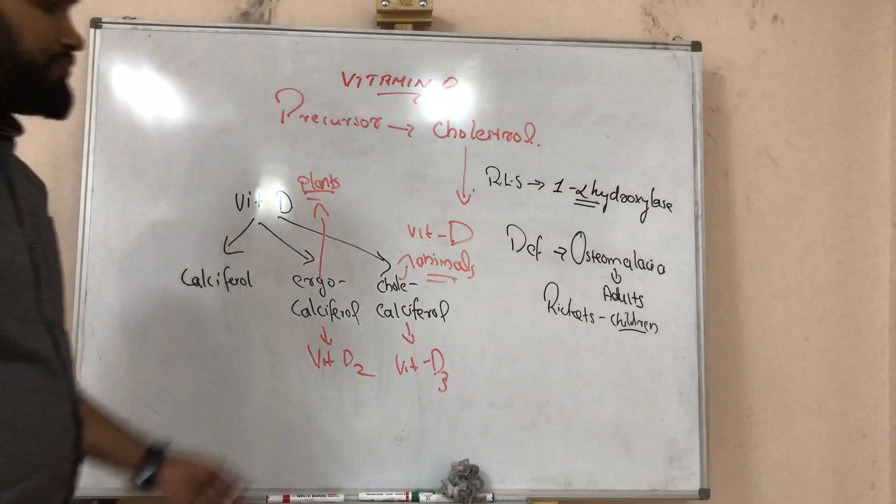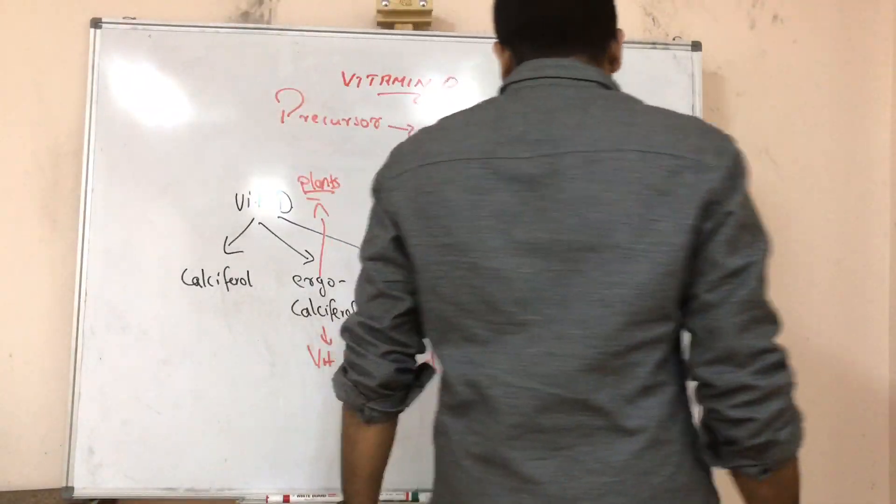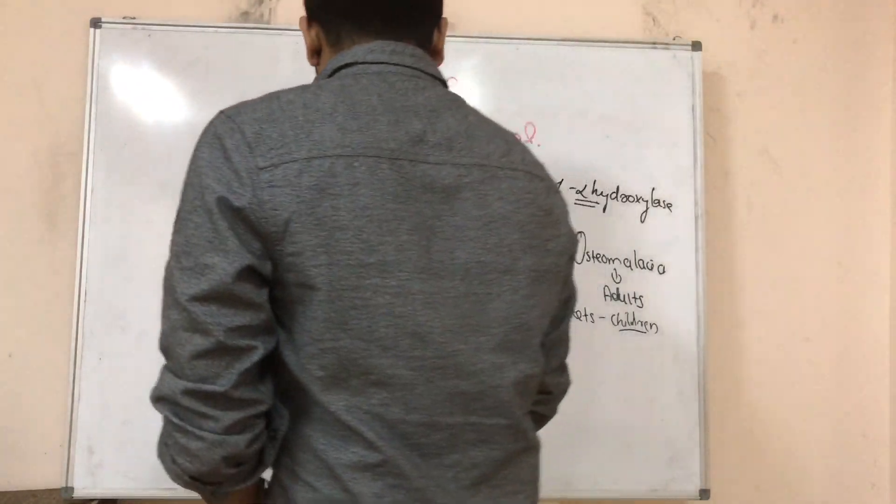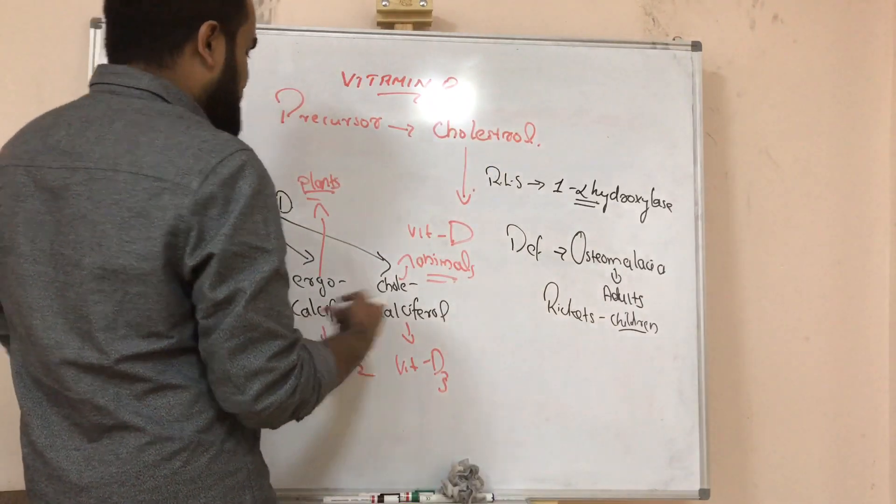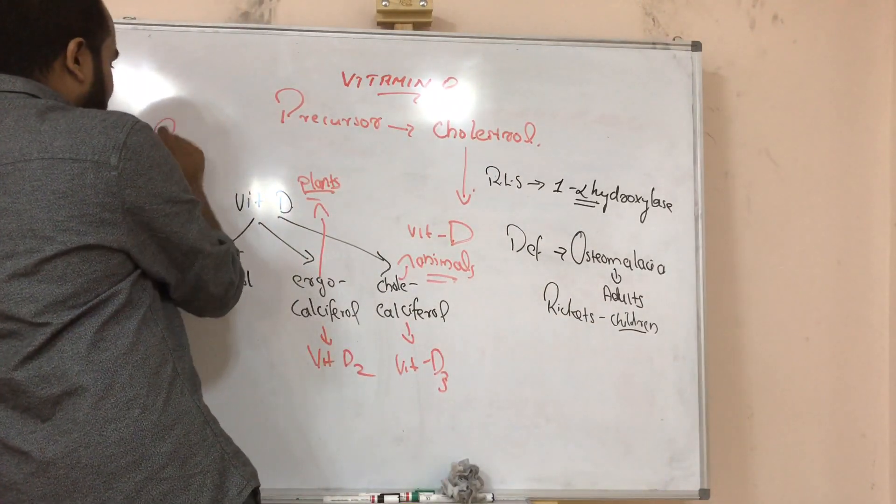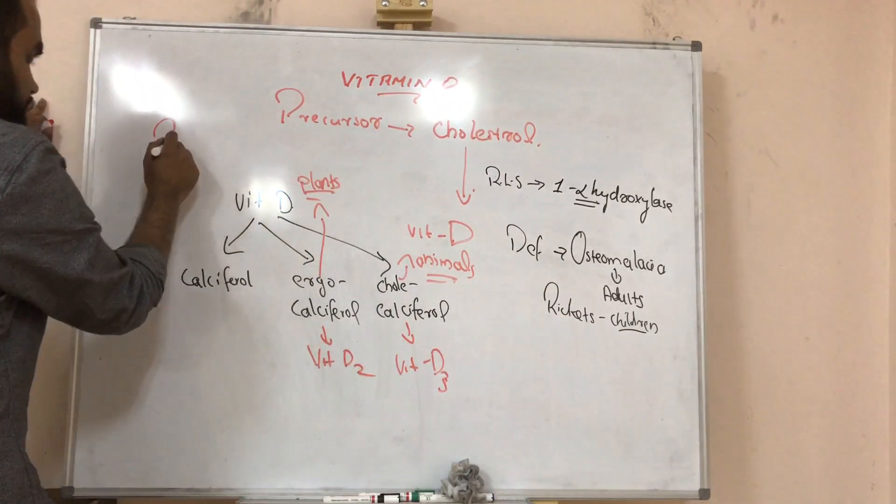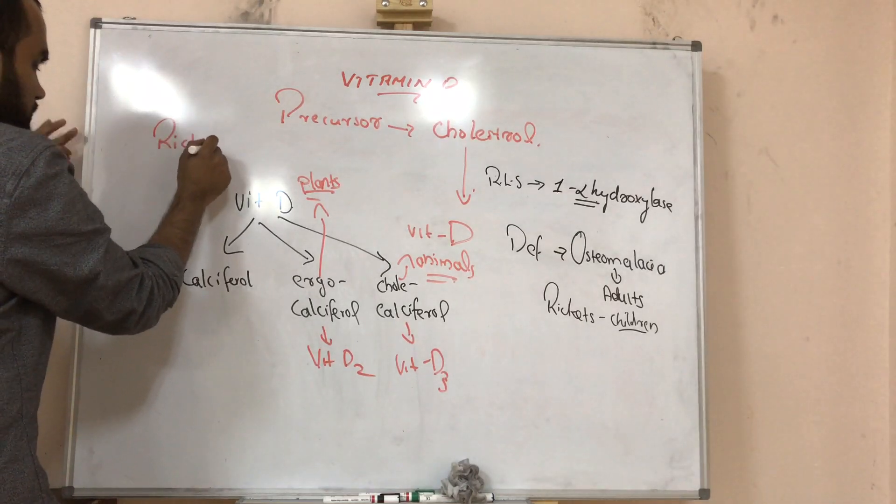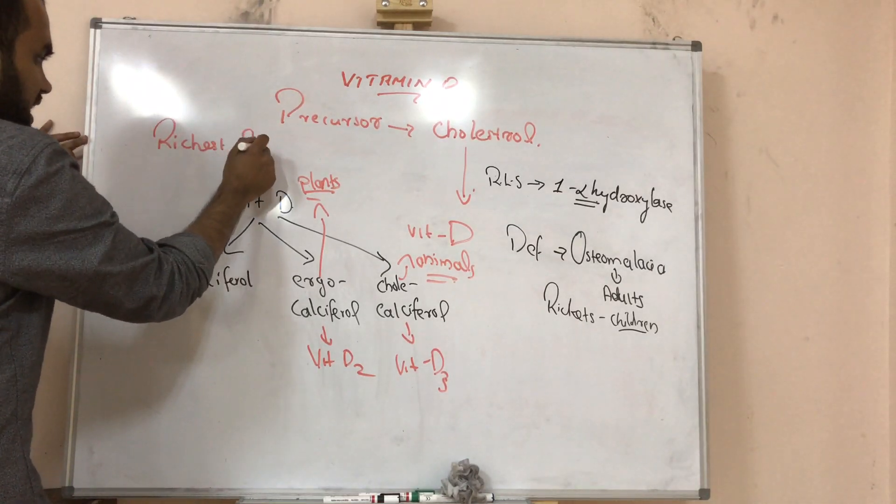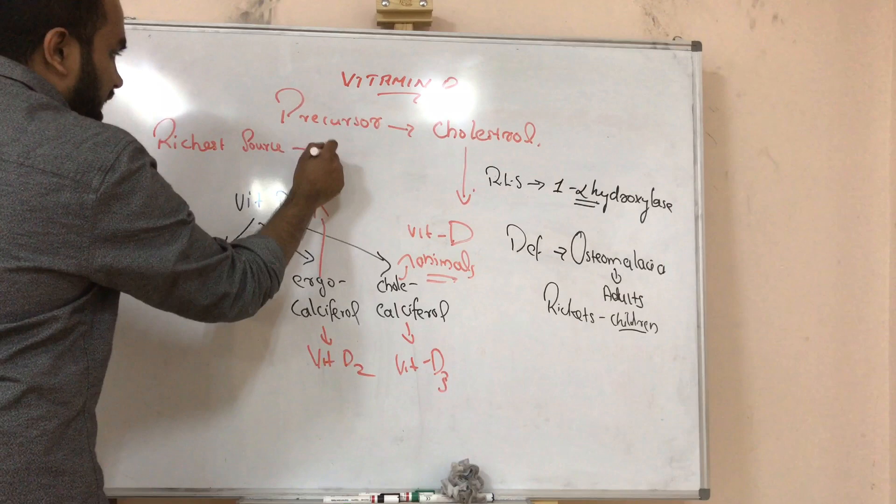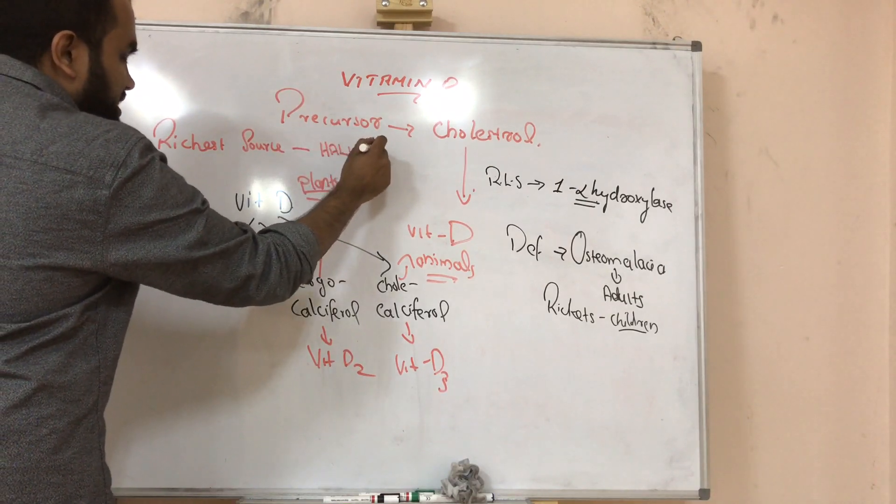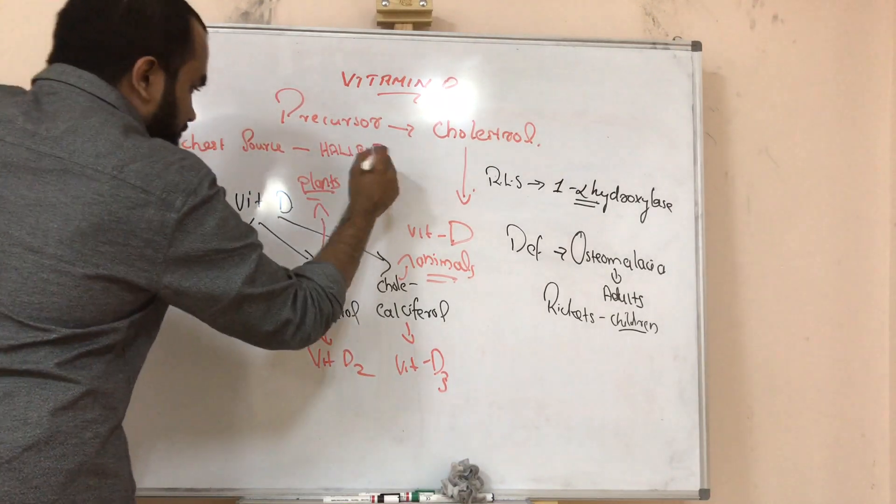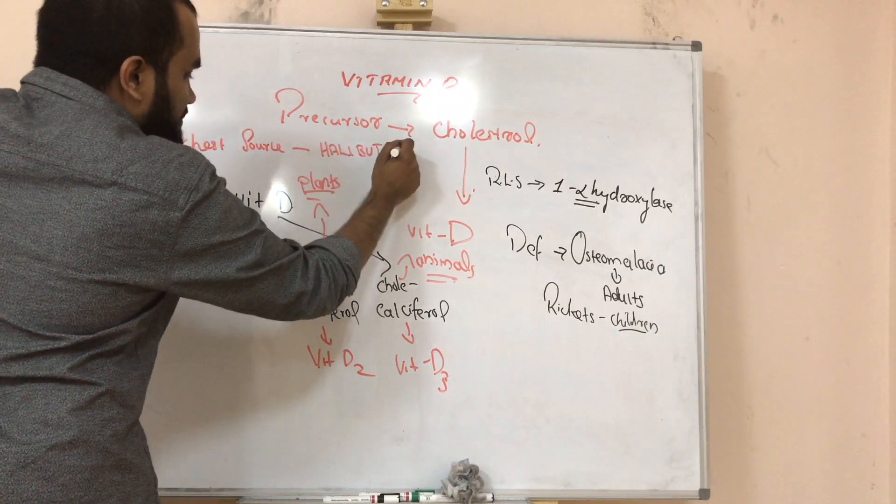Now the richest source of vitamin D, richest source is again halibut oil. That is tap fish oil, halibut tap fish.